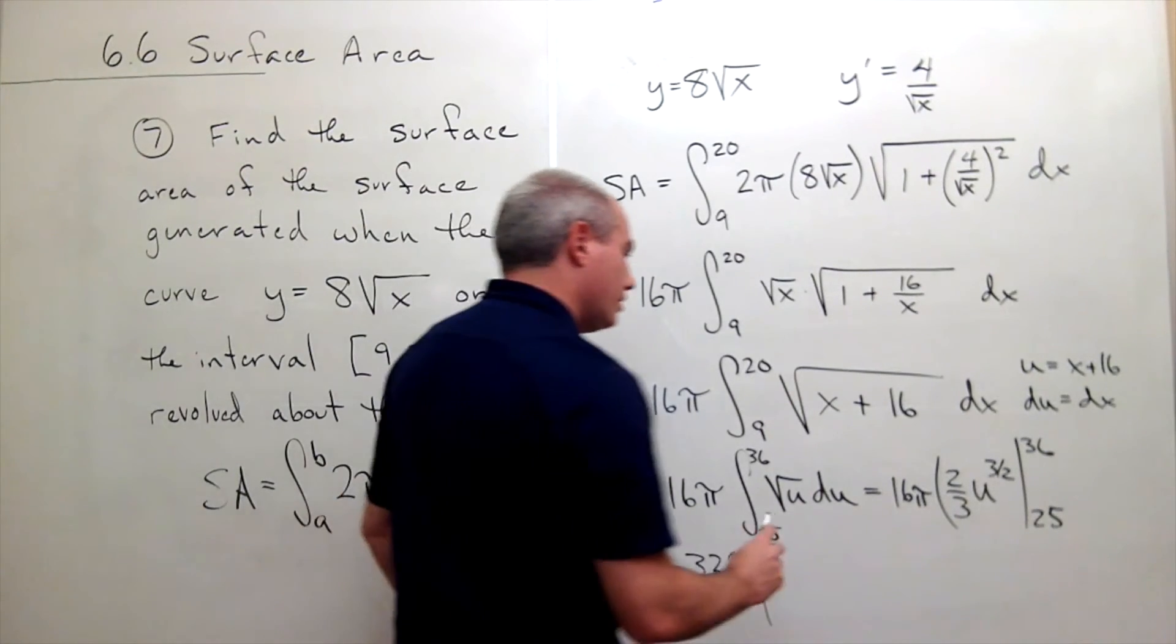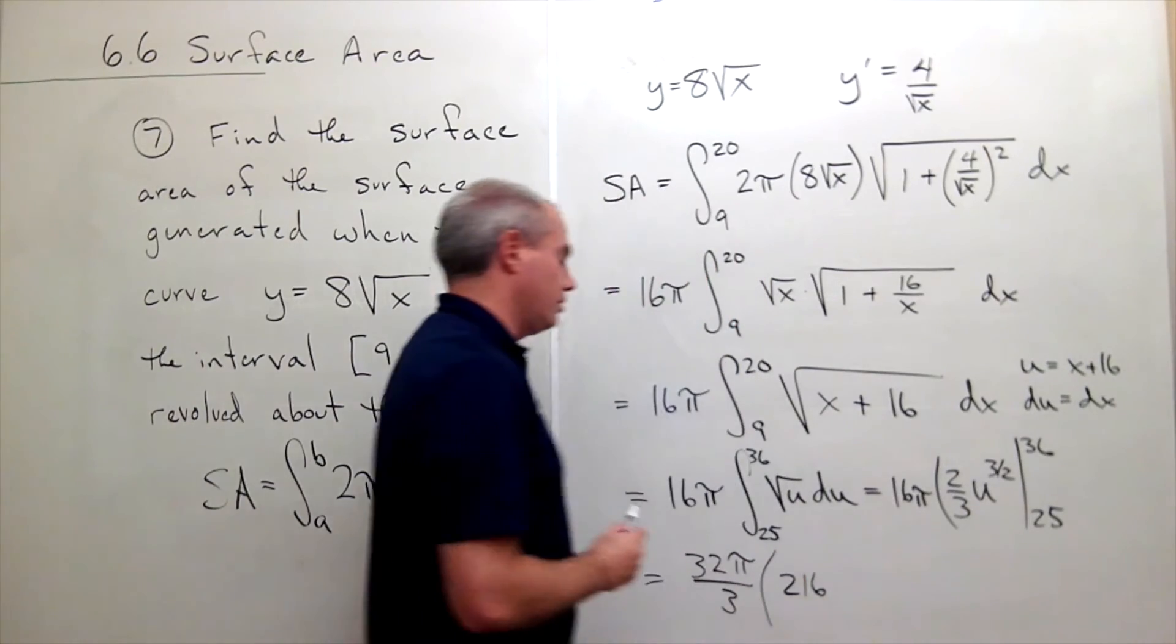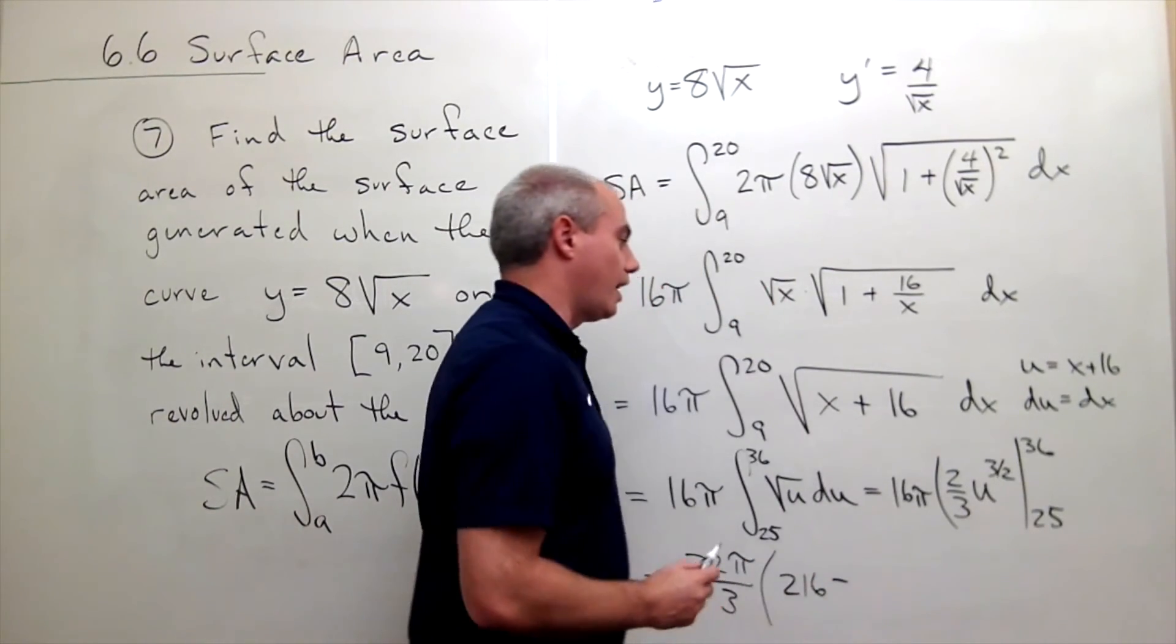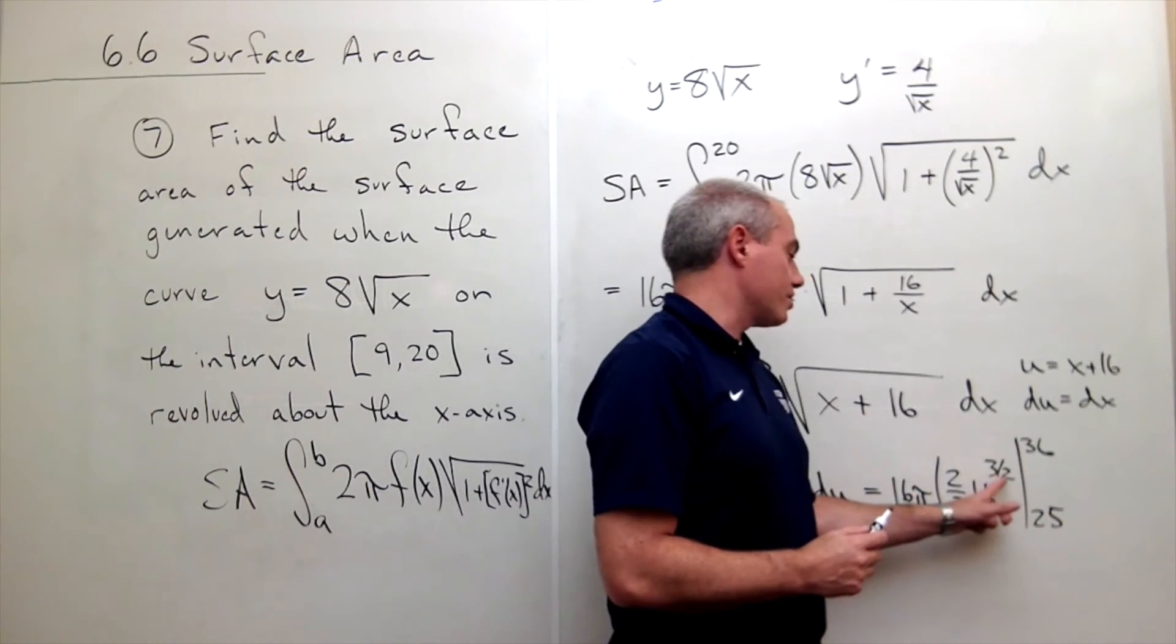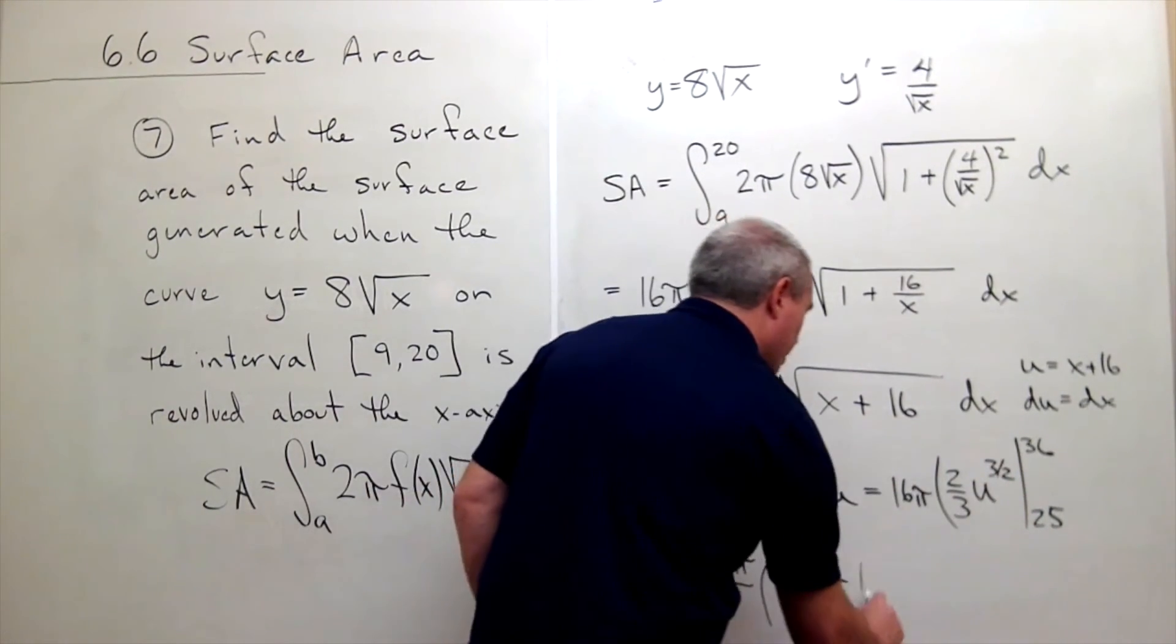So we get 216 minus I plug in 25. I take the square root of 25 is 5 and I cube that and I get 125.